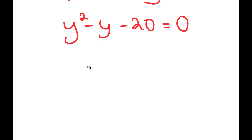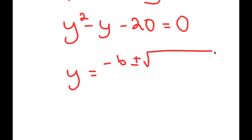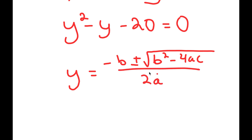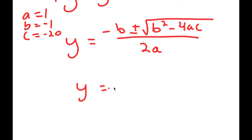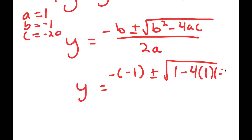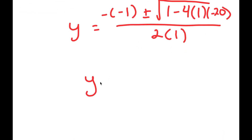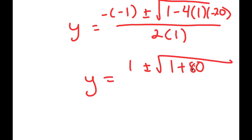Now, to solve this, I'm going to be using the quadratic formula, which is negative b plus or minus the square root of b squared minus 4ac, all over 2a. So in this case, a is 1, b is negative 1, and c is negative 20. So I get y equals negative negative 1 plus or minus the square root of negative 1 squared, which is positive 1, minus 4 times 1 times negative 20, all over 2 times 1. And this is equal to 1 plus or minus the square root of 1 plus 80 over 2.